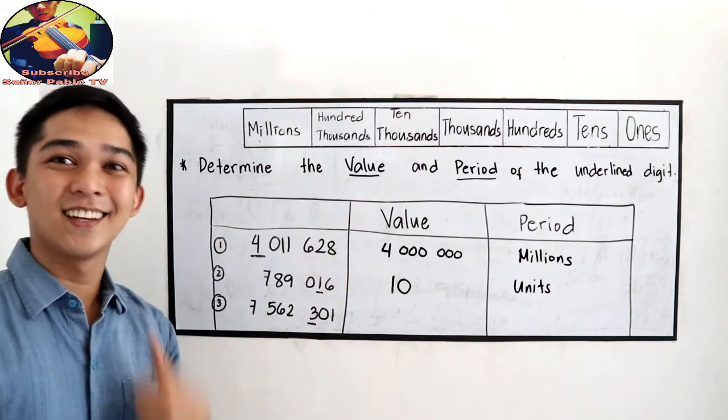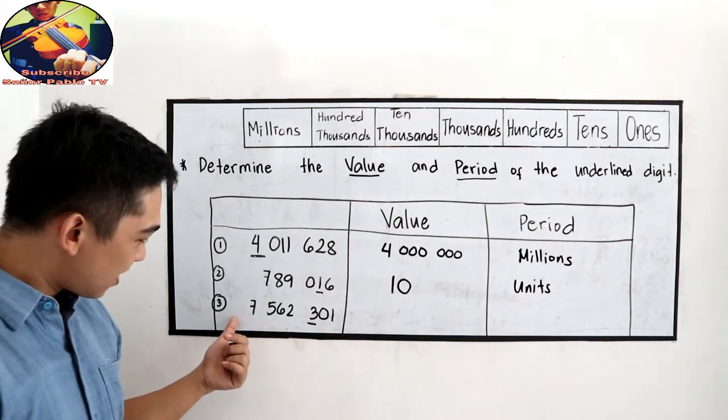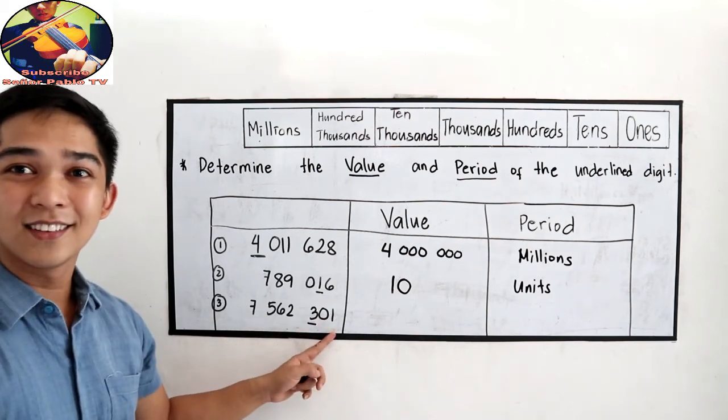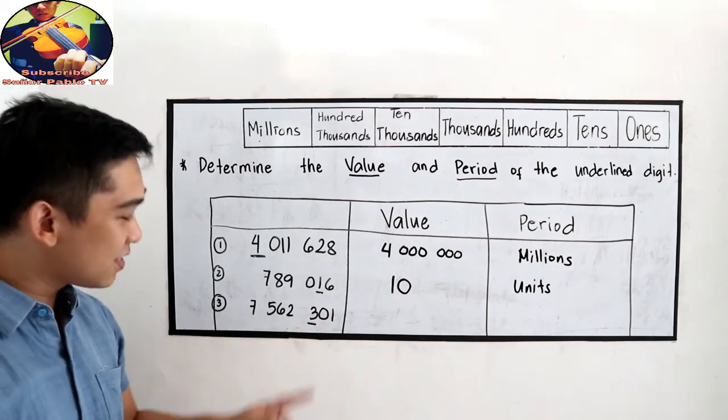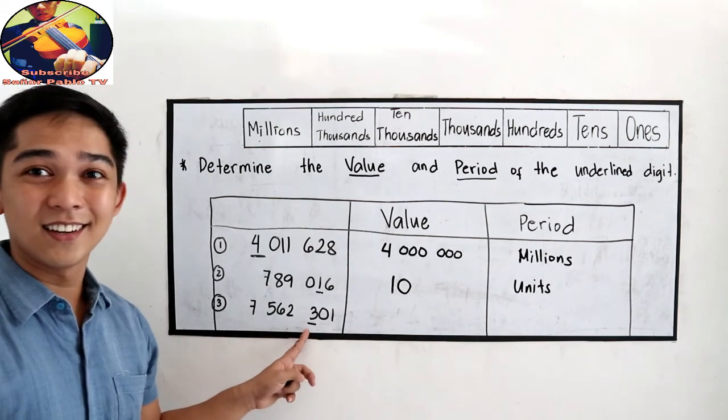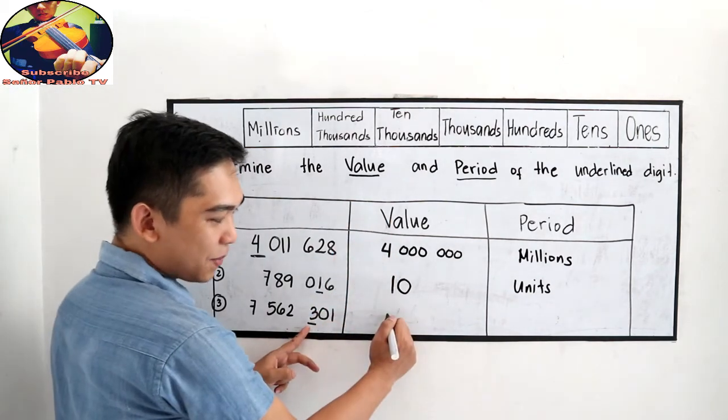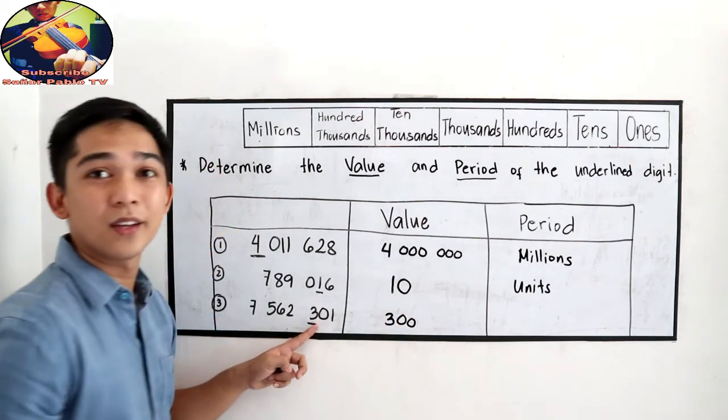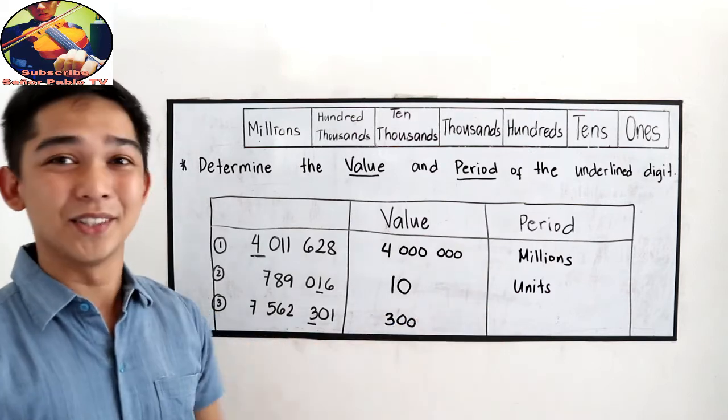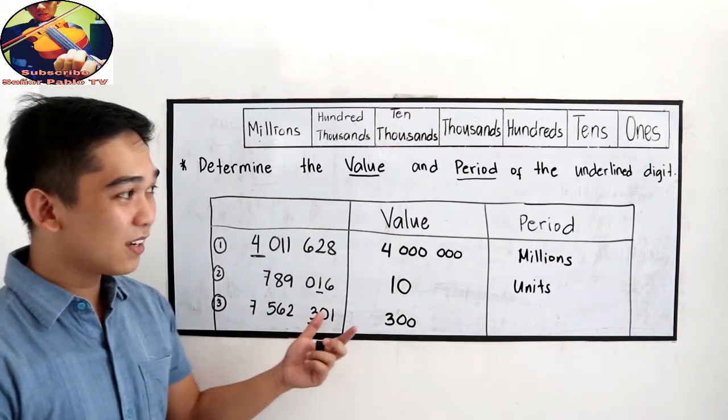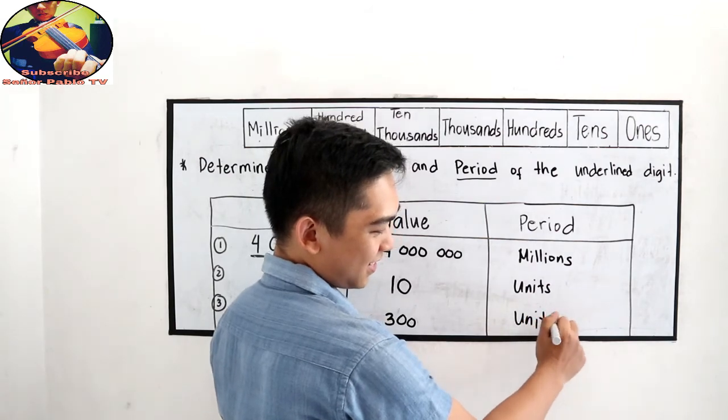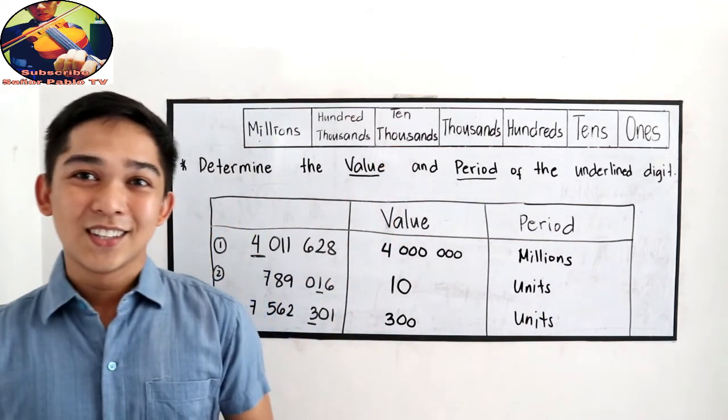Okay. Next. 756,301. And the underlined digit is 3. So the value is copy the underlined digit 3, then 0, 0. Now, what is the period? So first 3, it's the units period. Did you get it? Are we clear now?